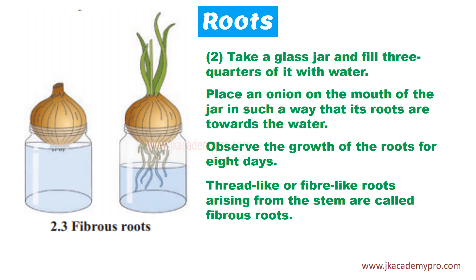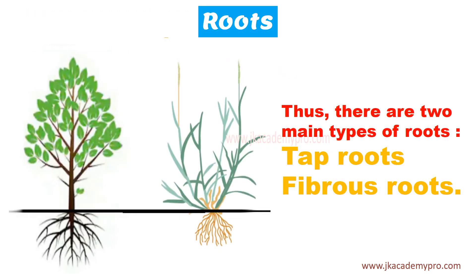This type of root system is called the fibrous root system. There are two main types of roots: tap roots and fibrous roots. In tap roots, there is one main root with other roots branching from it. In fibrous roots, many thread-like or fiber-like roots come out from one part of the plant and spread out in all directions.